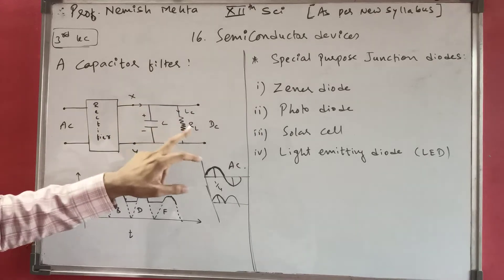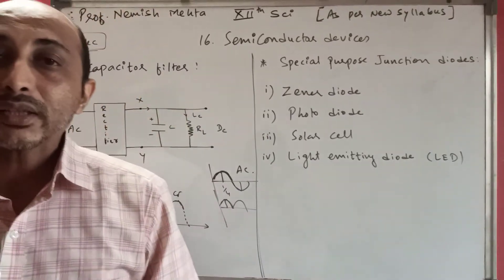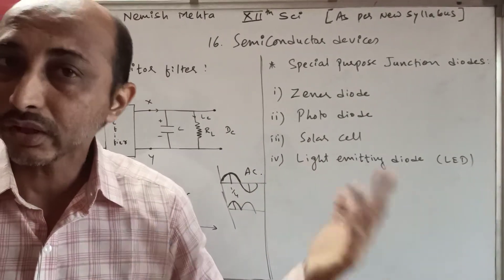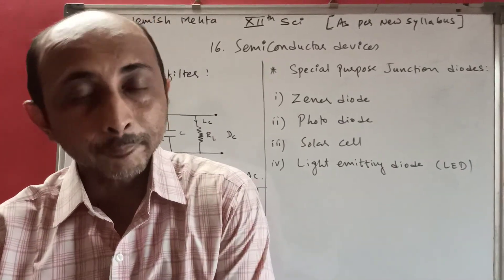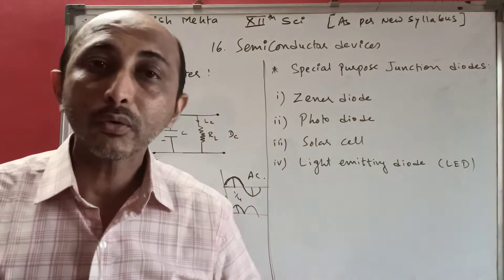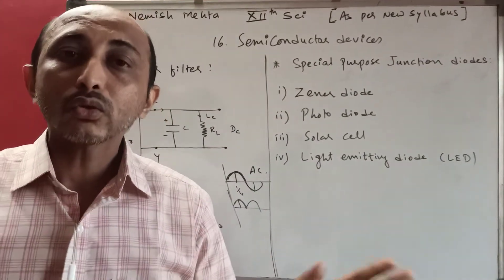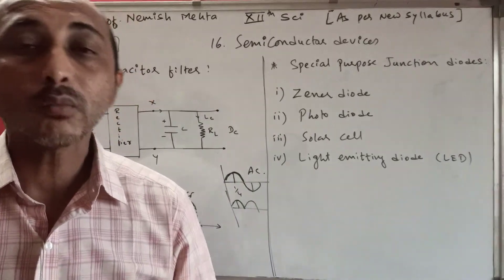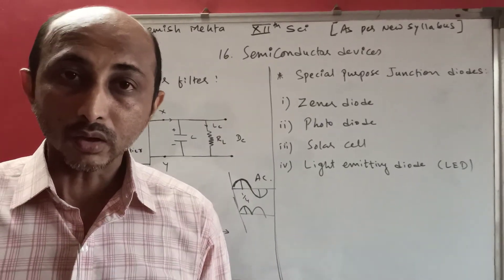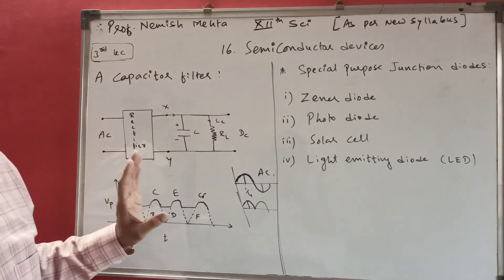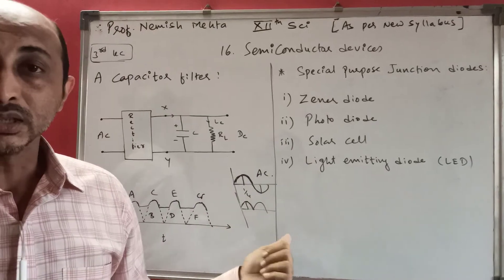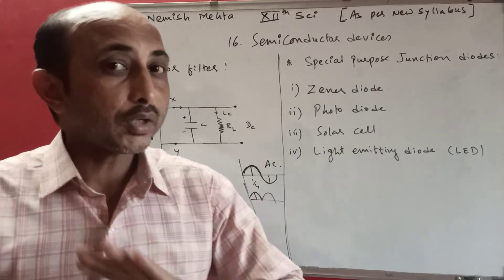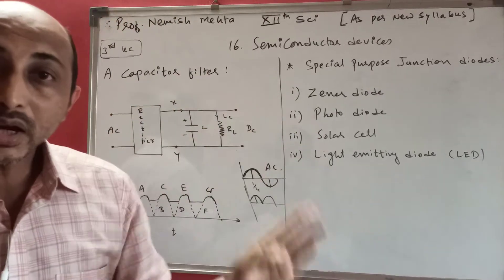When we connect a power supply here, we can run any instrument or machine that operates at a desired DC voltage. However, when a load is connected, the output voltage may drop. When the output drops upon connecting a load, it is called an unregulated DC supply. If the output does not drop, it is called a regulated power supply.